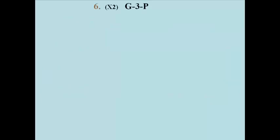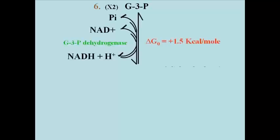In the first reaction of the second stage, glyceraldehyde 3-phosphate is oxidized and simultaneously phosphorylated to make a molecule of 1,3-diphosphoglyceric acid. The oxidizing agent is NAD+, which is reduced by electrons in a hydride ion to NADH. NAD+ is an electron carrier. The enzyme for this reaction is glyceraldehyde 3-phosphate dehydrogenase.